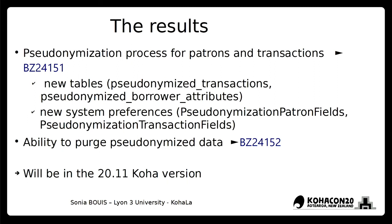Many libraries add important information in patron attributes. So another table, pseudonymized borrower attributes, is dedicated to storing the attributes that are marked as copyable for this purpose. The second feature adds the ability to purge pseudonymized data. Even if data in these tables is pseudonymized, we can't keep it forever, so a new script is needed to clean the content of these tables. These new features will be in the next release of Koha — the 20.11 release.